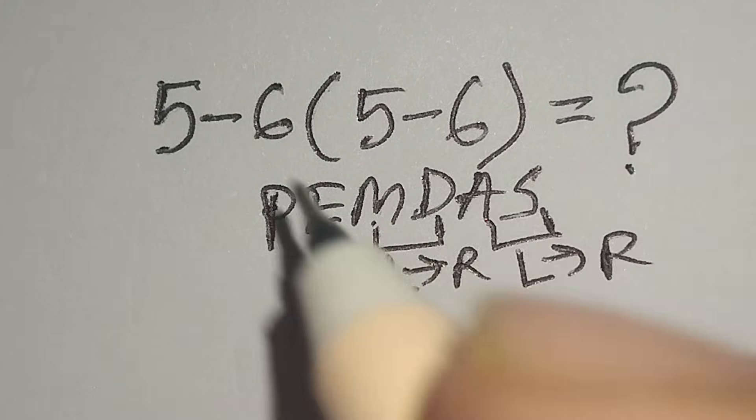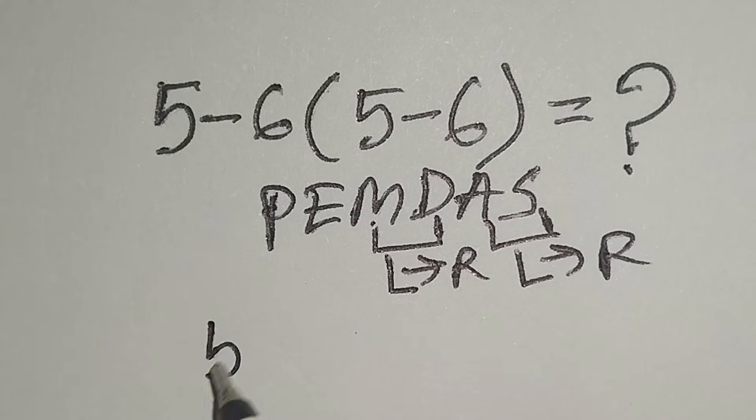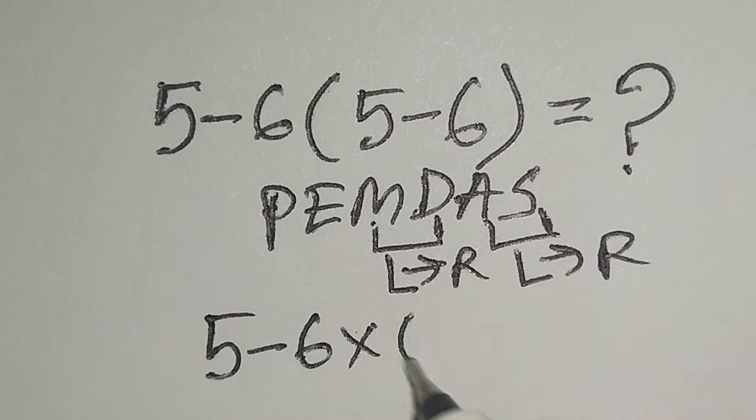Therefore, at first we have to work with this parenthesis. Here, this five minus six. Multiply this five minus six gives us negative one.